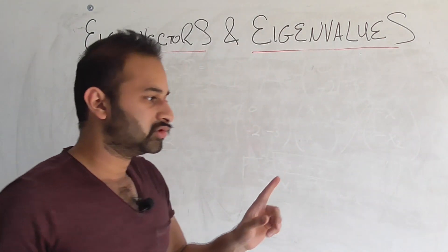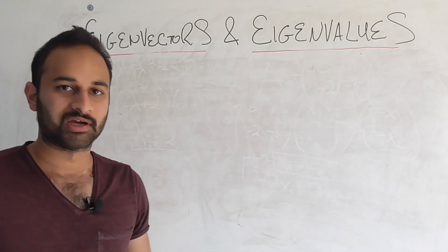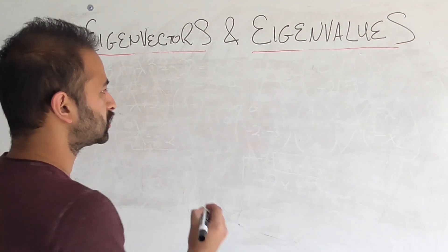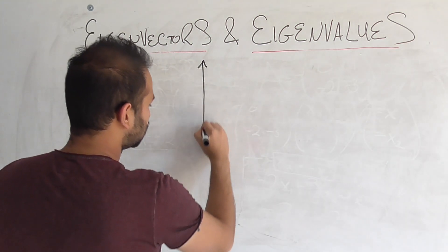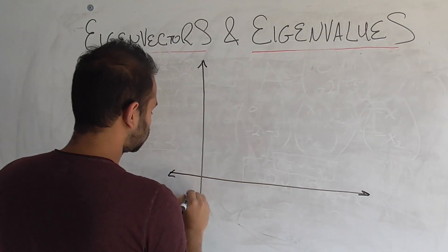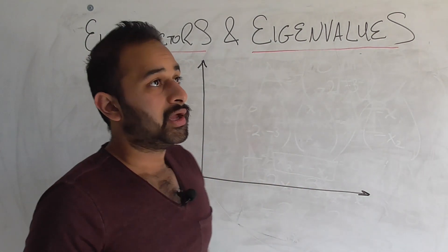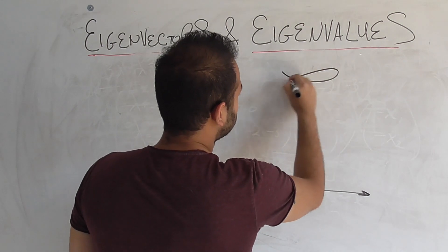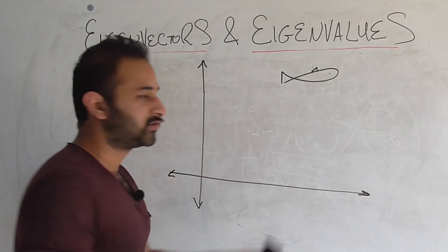So let's use a graph for a second because I think visuals help myself and a lot of people learn. So let's look at two dimensions because it's easier. And let's set up a real situation. Let's say we are a biologist studying fish. So I'm going to draw my best. Okay, that's fish.